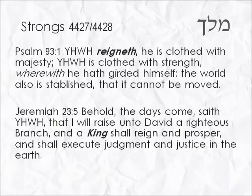There's also a verb associated with this root. Psalm 93:1 — 'Yahweh reigneth. He is clothed with majesty. Yahweh is clothed with strength wherewith he hath girded himself. The world also is established that it cannot be moved.' And again as a noun in Jeremiah 23:5 — 'Behold, the days come, saith Yahweh, that I will raise unto David a righteous branch, and a king shall reign and prosper and shall execute judgment and justice in the earth.'